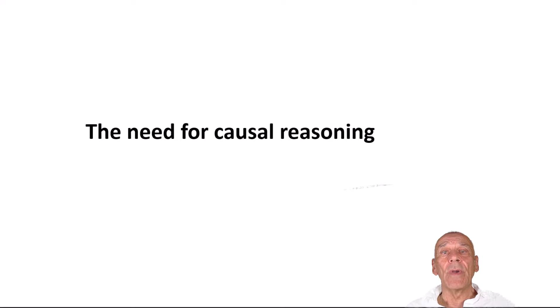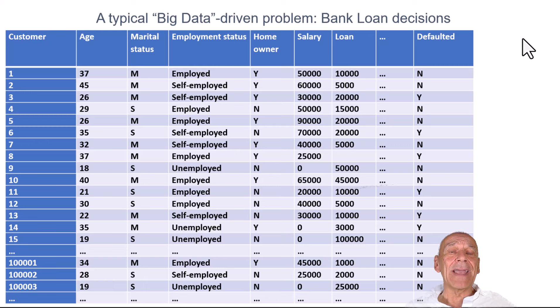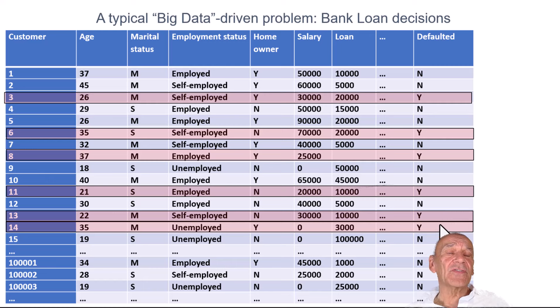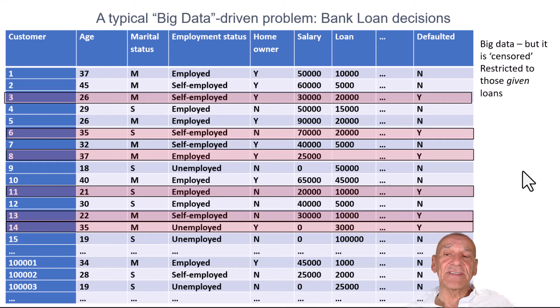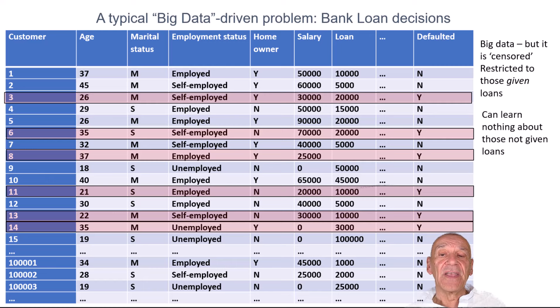To illustrate the need for causal reasoning, I'll start with a non-medical but typical example of a big data-driven problem where machine learning algorithms are used. We're talking about banks gathering comprehensive data on customers to whom they give loans. They use this information to risk-assess future customers — those most likely to default on loans. Statistical machine learning algorithms learn what the distinguishing features are of those customers who default and how they differ from those who don't. The first problem is that although this data might be big, it's completely missing data for an entire class of customers. As it's restricted to customers who were given loans, it contains no information at all on those who were refused loans. Such data is censored and therefore biased, and this creates other problems leading to fundamentally flawed algorithms.